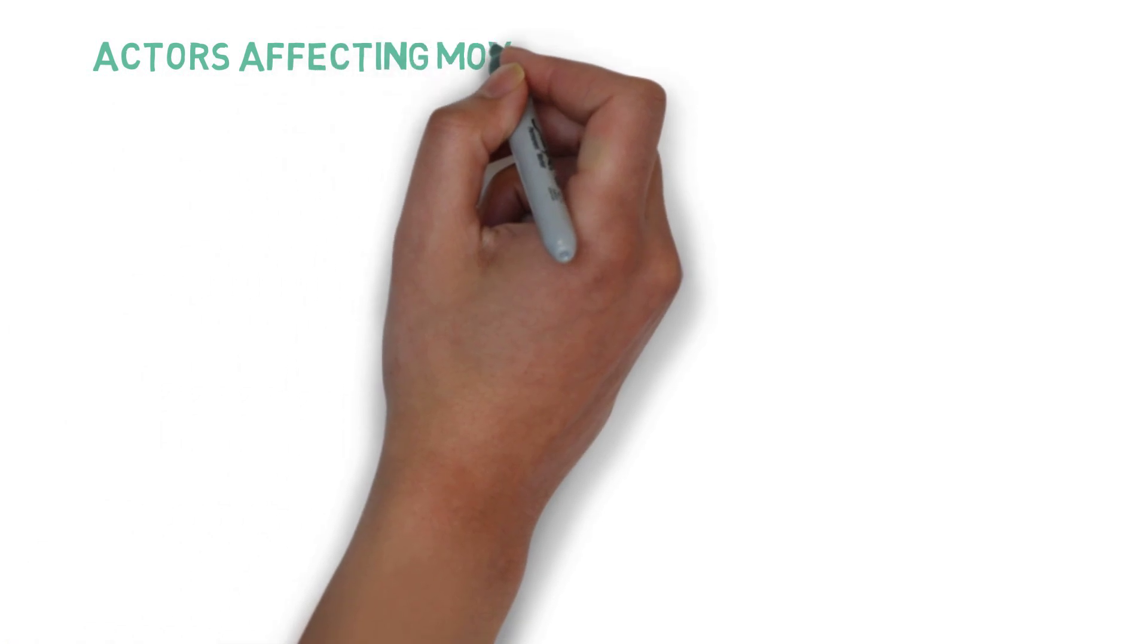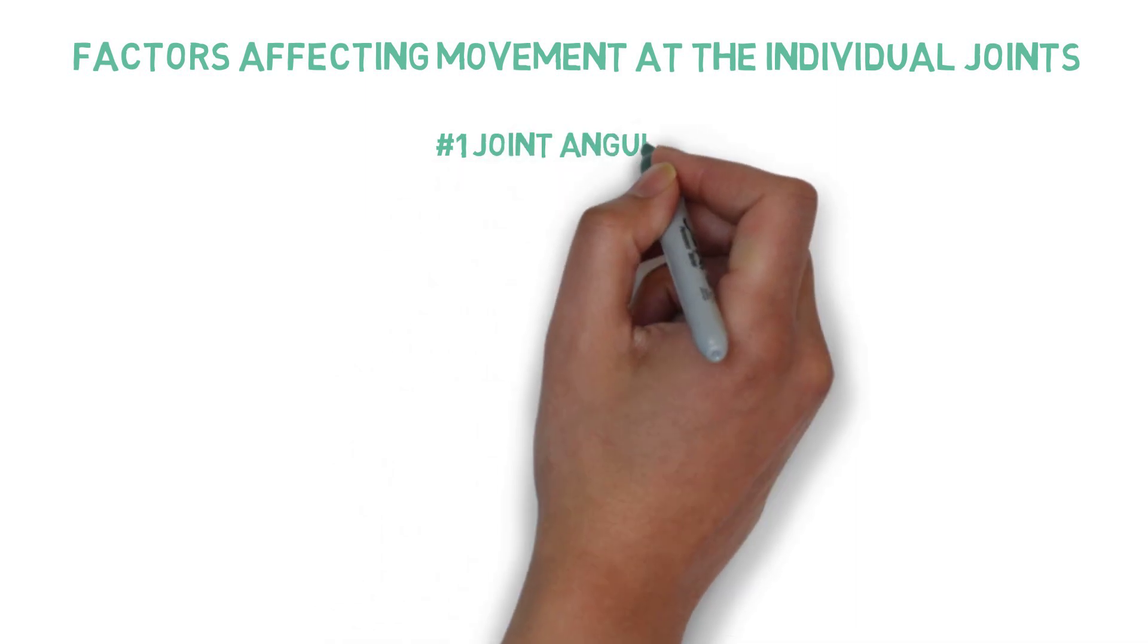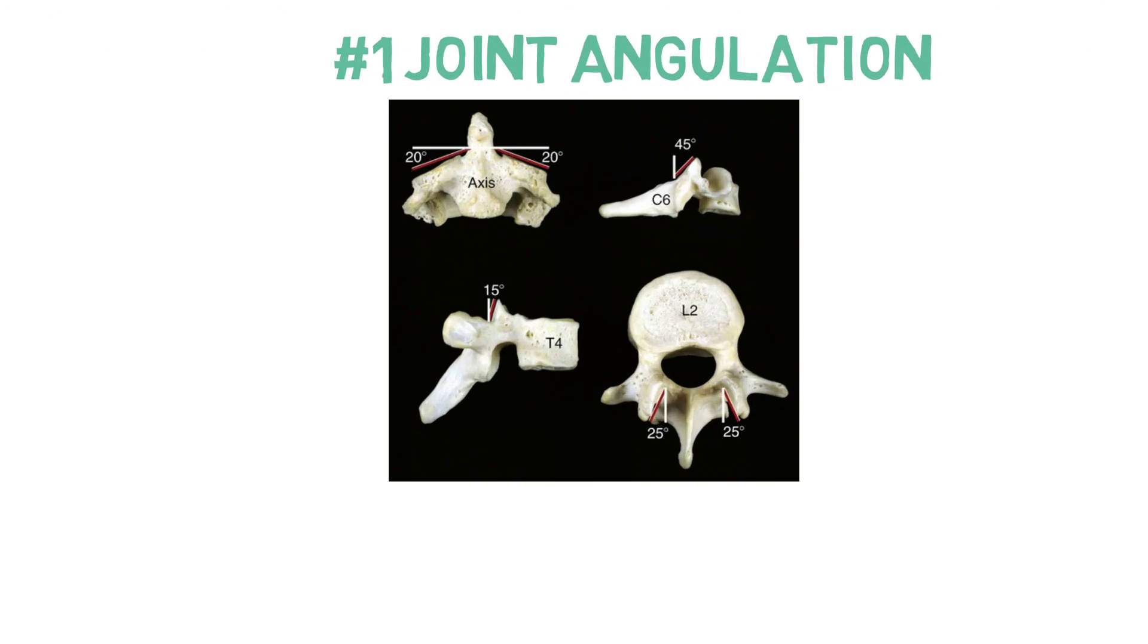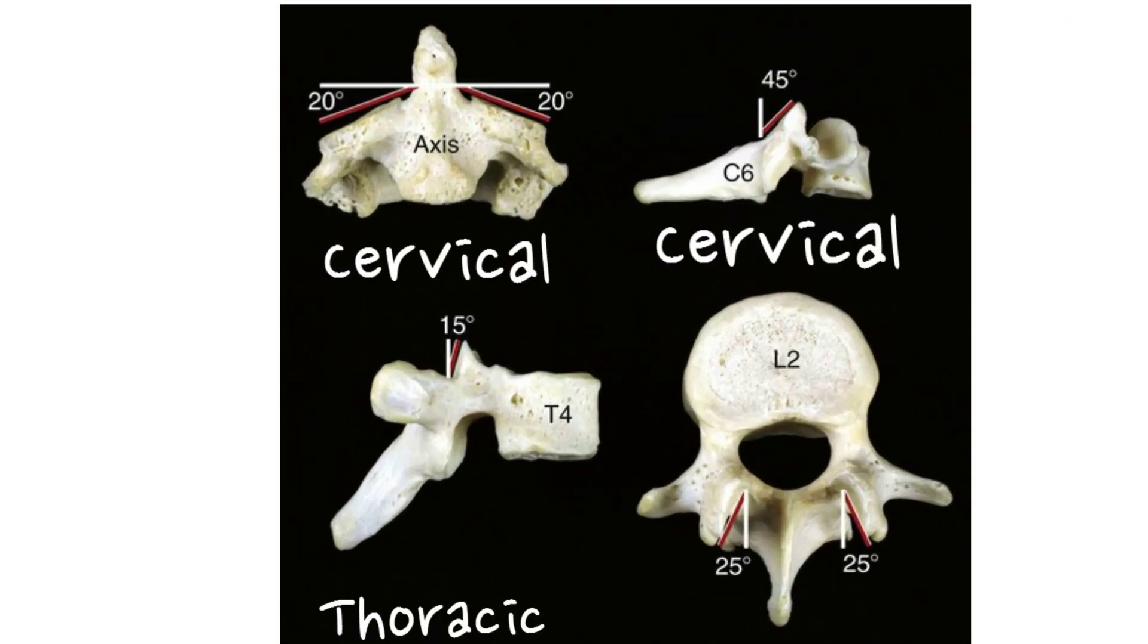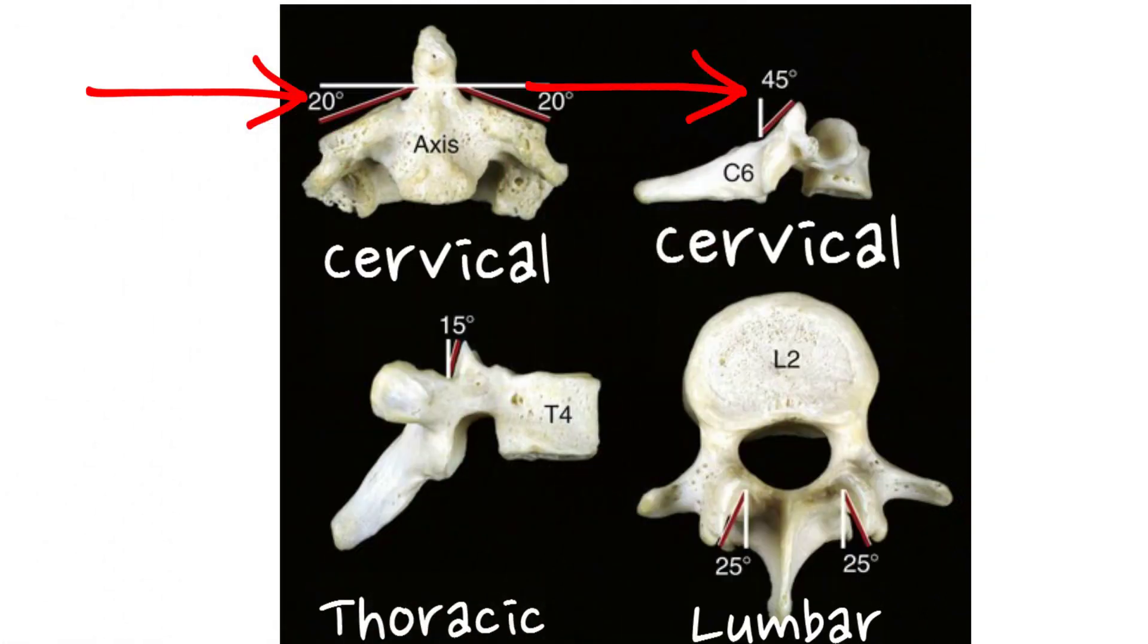Well, let's answer these questions now. There are three main factors influencing the mobility of the spine. The first one is the joint angulation. It is the main contributing factor to the movement of the vertebrae. The plane of the facet joints within each vertebral segment influences the kinematics at that specific region of the vertebral column.